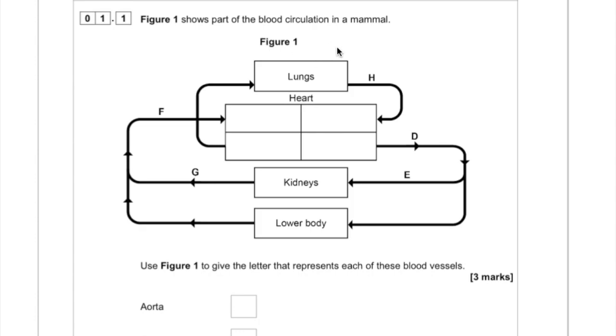Okay, so the first question here is about blood circulation in mammals. You've been given a diagram with some letters on representing some different blood vessels and you need to give the letter that represents each of the blood vessels that they've given you.